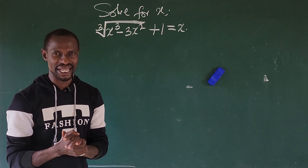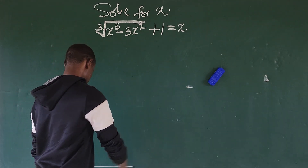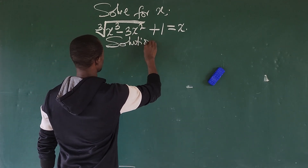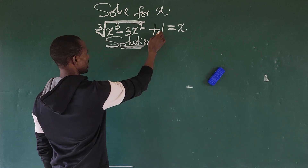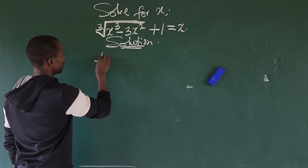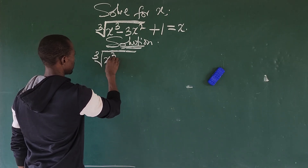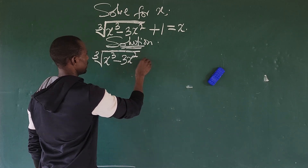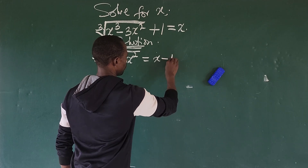This is Online Math TV, and if you've not subscribed, you have to subscribe. Let's get to the solution. The first thing we do is move the 1 to the left side of the equation so we can deal with this radical. This gives us the cube root of x to the power of 3, minus 3x to the power of 2, equals x minus 1.